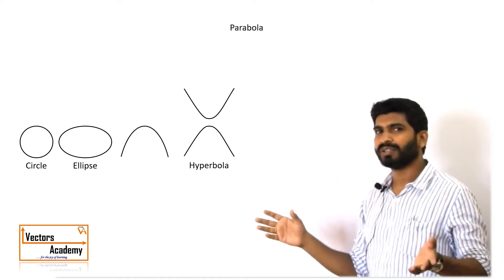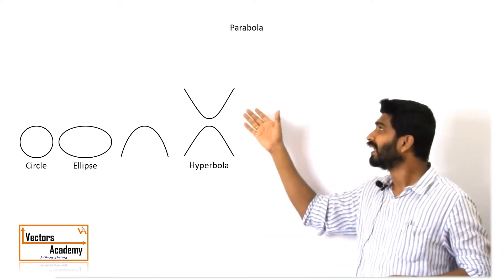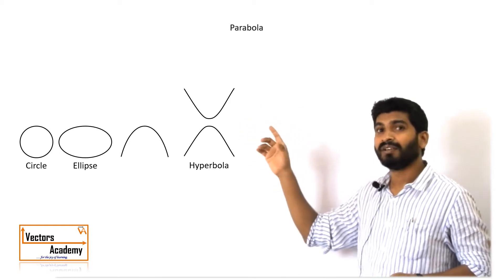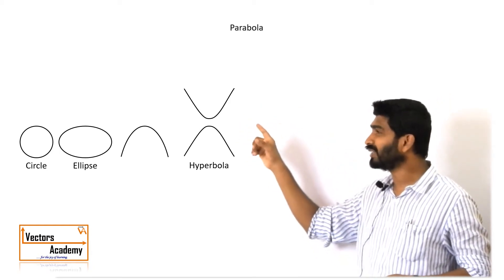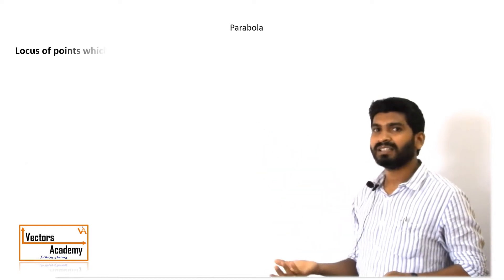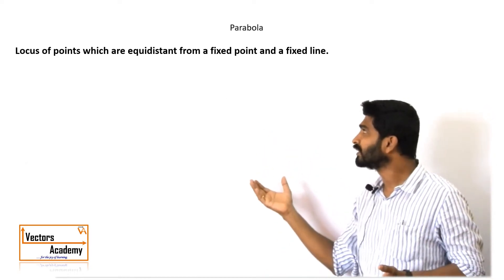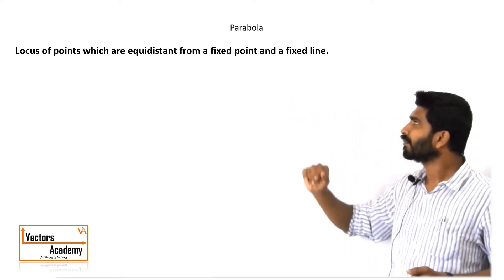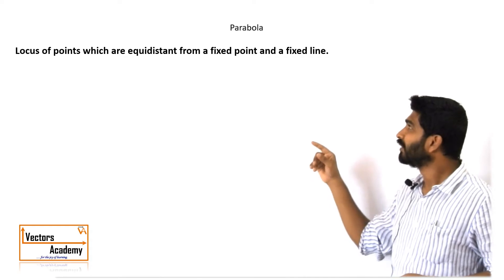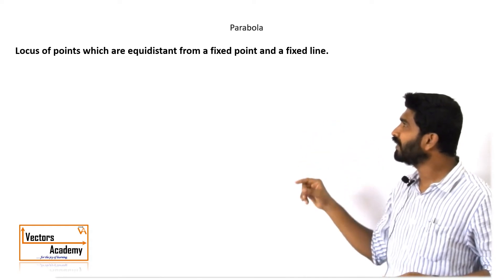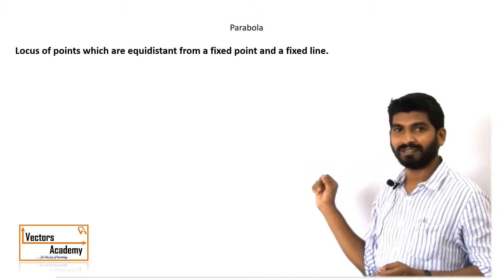A parabola can be defined in two ways. The first, which we have already seen, is the shape obtained when a cone is cut at some angle to the axis of the cone. The other way of defining the parabola is as the collection of points — a locus of points — which are equidistant from a fixed point and a fixed line.